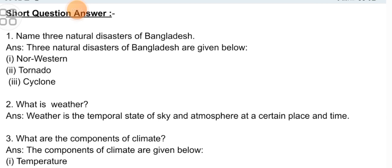Now moving to the short questions. Question 1: Name three natural disasters of Bangladesh. Three natural disasters of Bangladesh are: Northwestern, tornado, and cyclone.